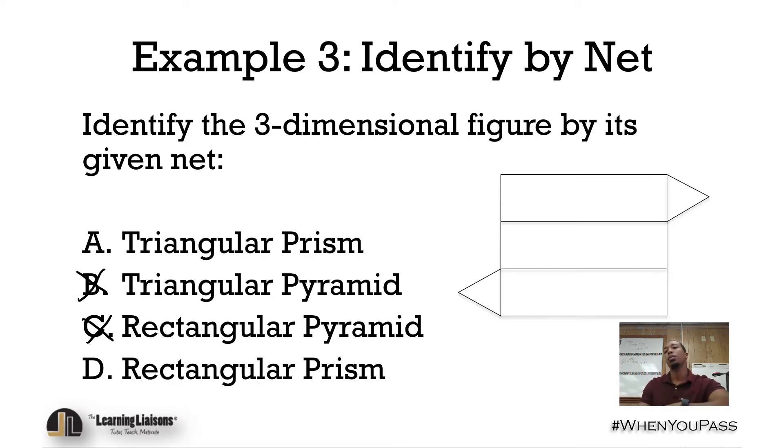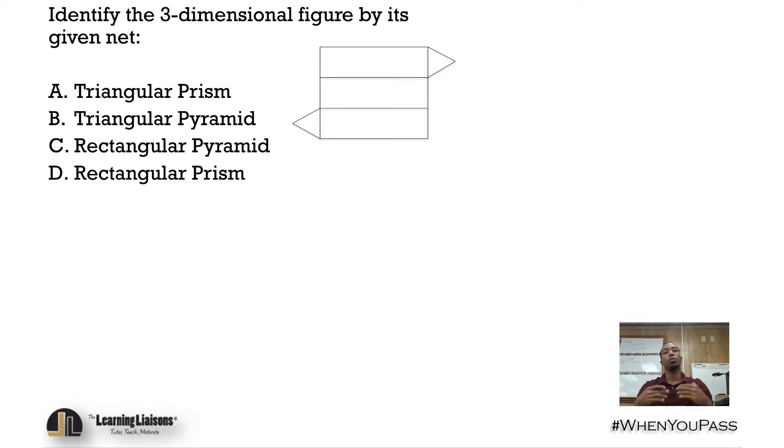And then when we think about it, prisms have two bases, so what do we see two of here? We see two triangles. When we piece this back together, we'll go ahead and receive a triangular prism. Remember, we name it by the base, so it's all too important for us to know. And there we go.